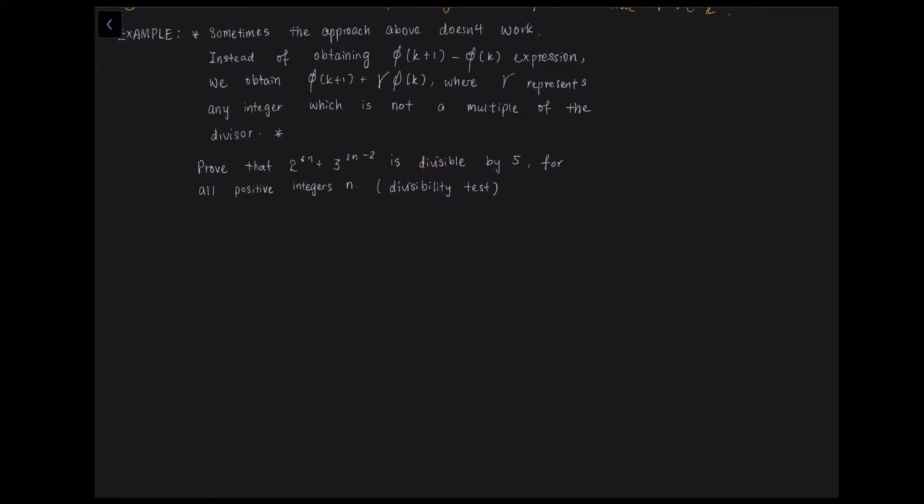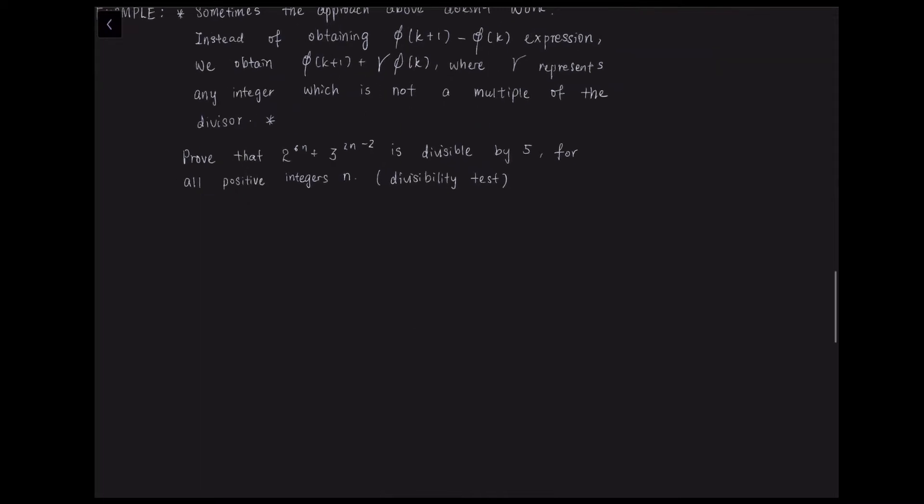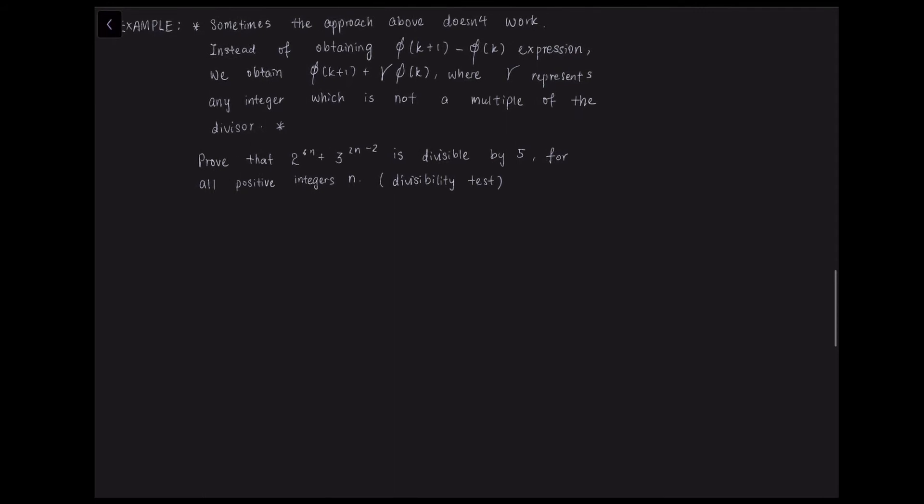So let us try to use this in this example. We want to prove that 2 to the power of 6n plus 3 to the power of 2n minus 2 is divisible by 5 for all positive integer n.